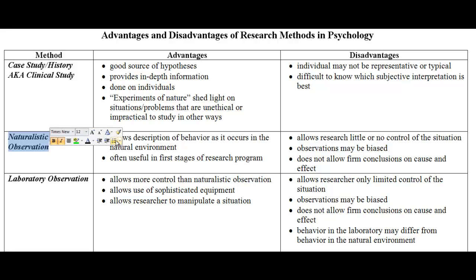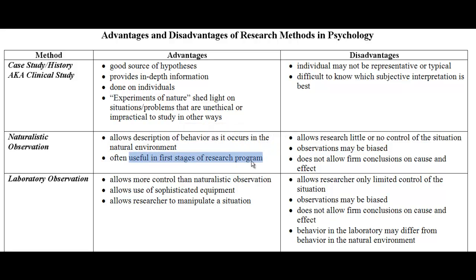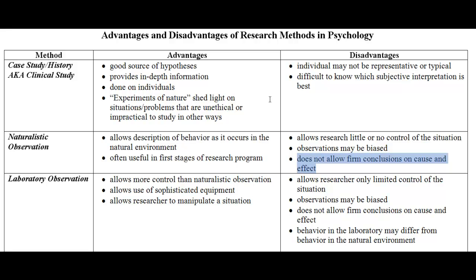Naturalistic observation. Advantage: it allows a description of behavior as it occurs in the natural environment — hence the term naturalistic observation — so we're watching people in their environment. It's often useful in the first stages of a research program. Disadvantages: there is very little or no control of the situation, observations can be biased unless detailed prep work is done, and you cannot conclude cause and effect.